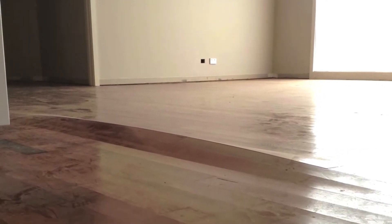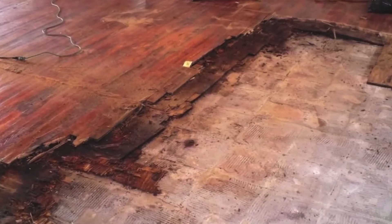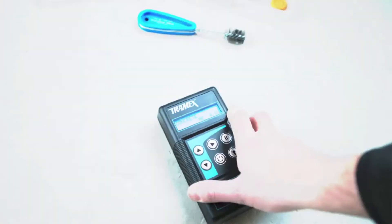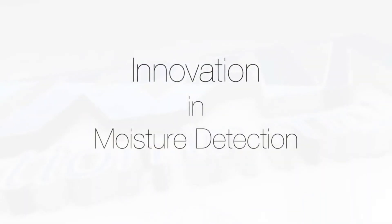Excessive moisture in concrete floor slabs and screeds, or a disequilibrium between moisture content in the building and the flooring materials, can lead to major problems in many types of floor coverings. Why take risks? Test with Tramex. Innovation in moisture detection.